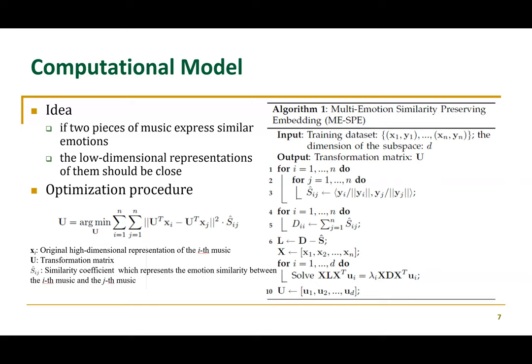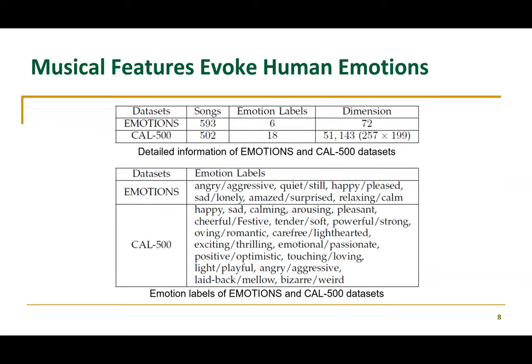Now let's look at the performance. For validation, we worked on two standard datasets. The first is called Emotions, which includes about 600 audio pieces with basic emotion labels similar to facial expressions: angry, quiet, happy, sad, amazed, and relaxing. The second dataset includes 500 audio pieces with more complex emotion labels such as touching, tender, and soft.